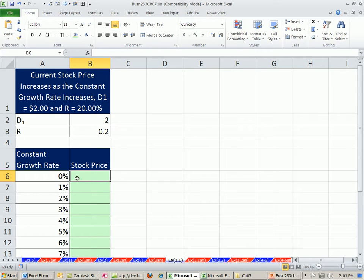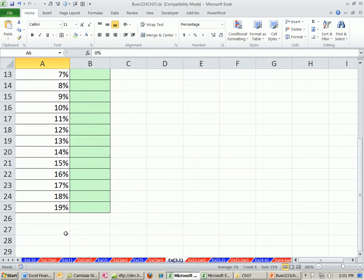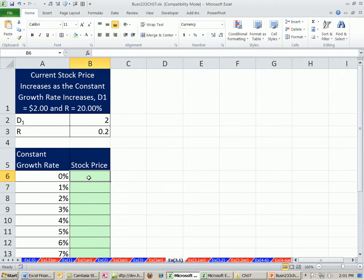So first we have to build a little table. We have 0% to 19%. Remember, the growth rate for this model is assumed to be less than the required return, so we only go to 19.